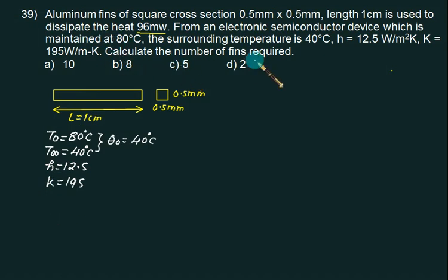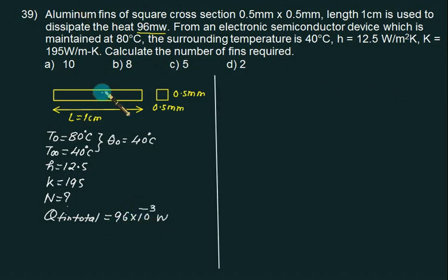We are given the total heat transfer rate Q total equals 96 into 10 to the power minus 3 watts. First of all we will calculate cross-section area and we will confirm after finding the value of M whether the fin is short or long. 0.5 into 0.5 is 0.25 mm squared is 10 to the power minus 6 meter squared. Perimeter is 2 times 0.5 plus 0.5 is 1 multiplied by 2, so 2 into 10 to the power minus 3 meters.